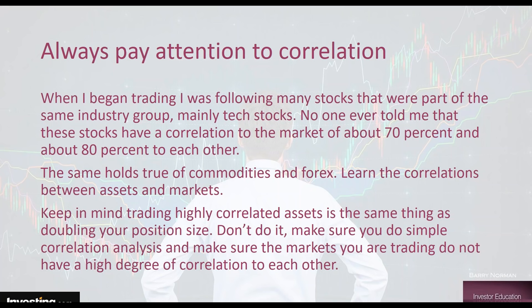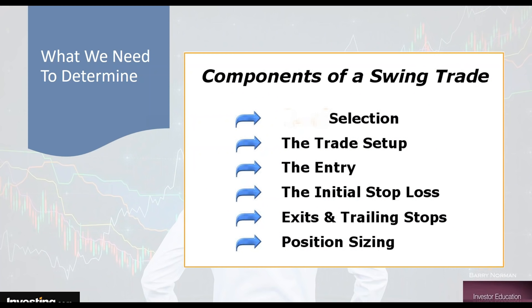If you think tech is going to go up, figure out which is the best asset under tech to trade — which one gives you the most distinct signals. Apple might be a little negative right now, so maybe you should take Google if you think tech is going up. There are many components to consider when selecting the asset or market to trade. Figure out if Forex, commodities, or stocks are best for you, and even limit it down to a group of assets. You can't track them all, and you do need to track these assets.